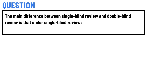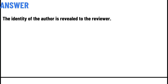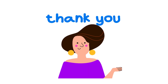Today's question is: what is the main difference between single blind review and double blind review? The correct answer is that under single blind review, the identity of the author is revealed to the reviewer.